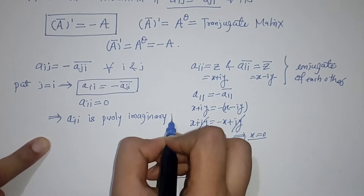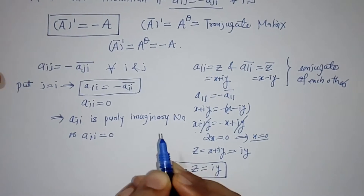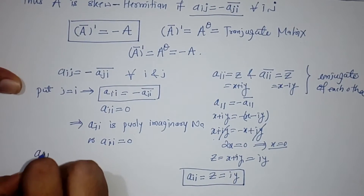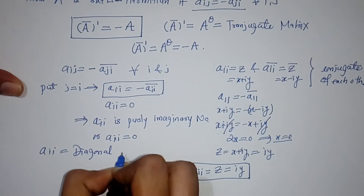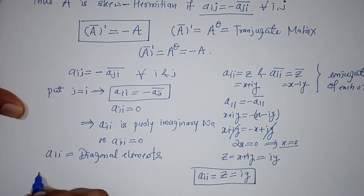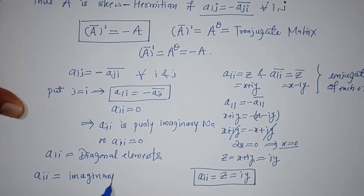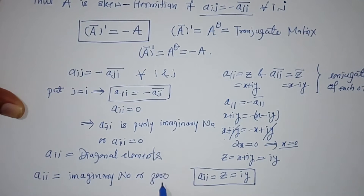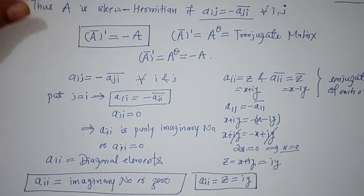So for a skew Hermitian matrix, the diagonal elements Aii must be either purely imaginary numbers or zero. This condition must be strictly followed by any skew Hermitian matrix.